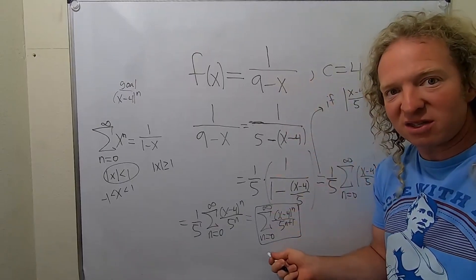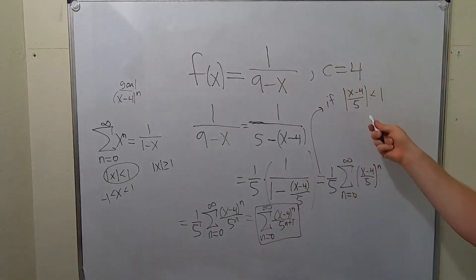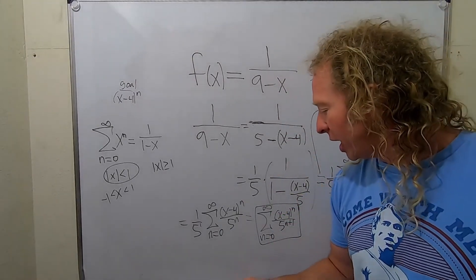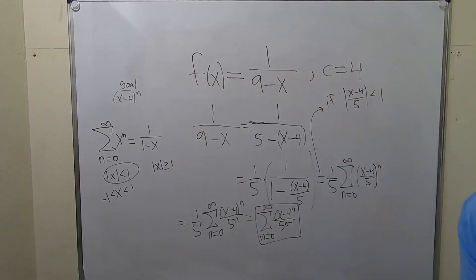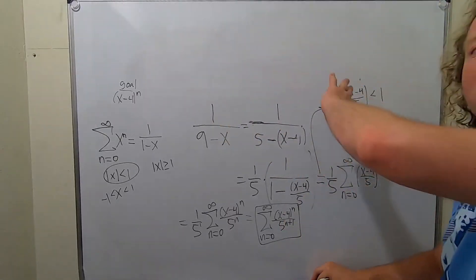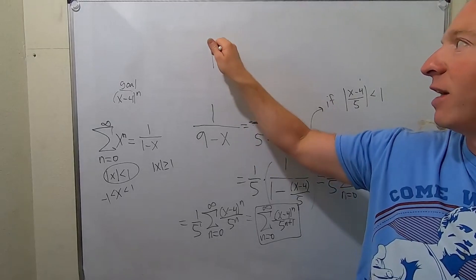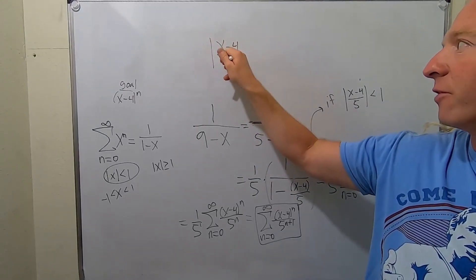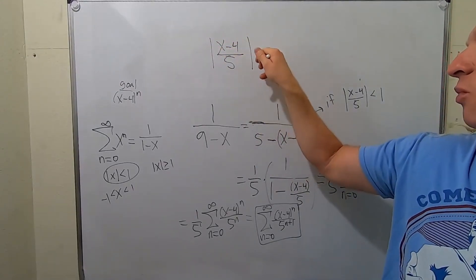So that would be your infinite series representation of this function. So this function is equal to this whenever this condition is true. So now what we'll do is we will find the interval of convergence. We're going to do that by solving this inequality. So I'm going to erase this and rewrite this up here so we can go through it. So we have the absolute value of x minus 4 over 5 less than 1.